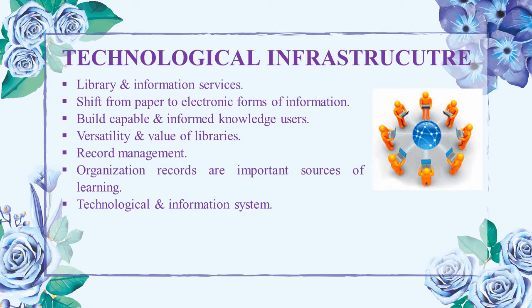The first category is library and information services. Larger organizations identify their library and information services as key elements of their knowledge strategy. The shift from paper to electronic forms of information has changed the nature of services offered to users, allowing a more responsive and accessible service to operate either centrally or from the user's desktop. Effective library services should be connected with users, monitoring their changing needs, profiles, and work priorities.